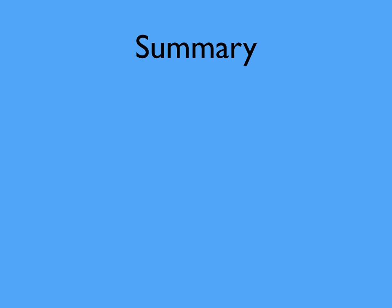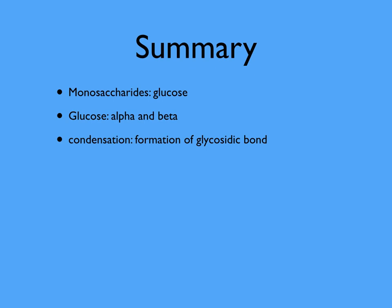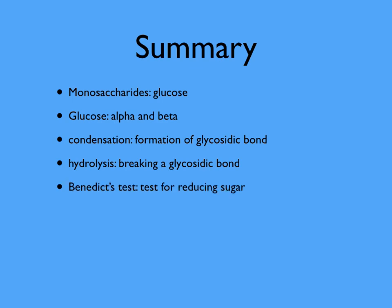In summary: we've looked at monosaccharides, particularly glucose, which forms alpha glucose (OH group below carbon 1) and beta glucose (OH group above carbon 1). A condensation reaction forms a glycosidic bond, and hydrolysis breaks a glycosidic bond. The Benedict's test is used for reducing sugars. To test for a non-reducing sugar, add acid, then alkali, then Benedict's — and that concludes our lesson.